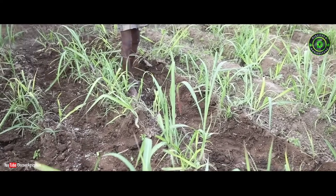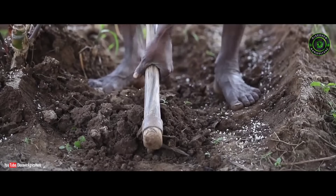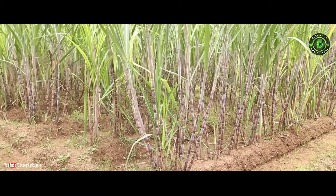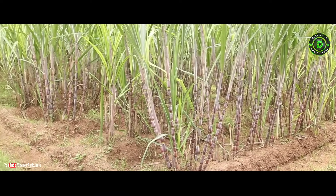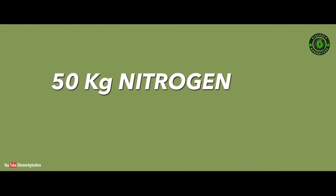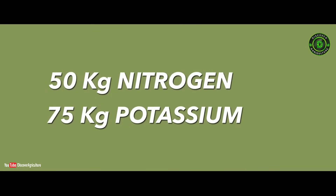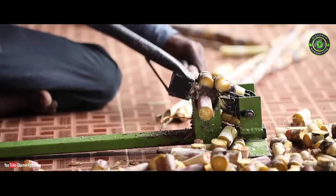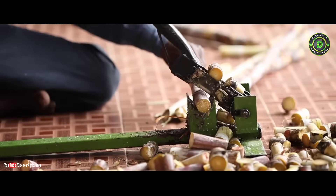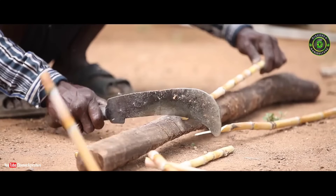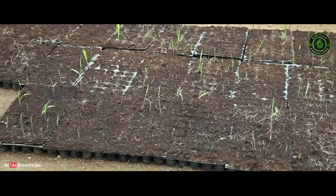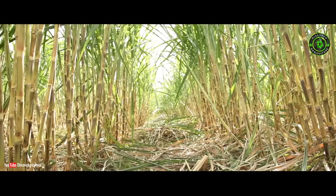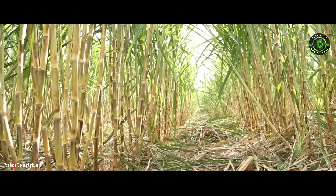One month before the harvest of the nursery cane, 50 kg nitrogen and 75 kg potassium can be applied as an additional dose. This enables quality nursery cane with higher glucose levels that ensures good germination. Detrashing should be avoided in the nursery plots.